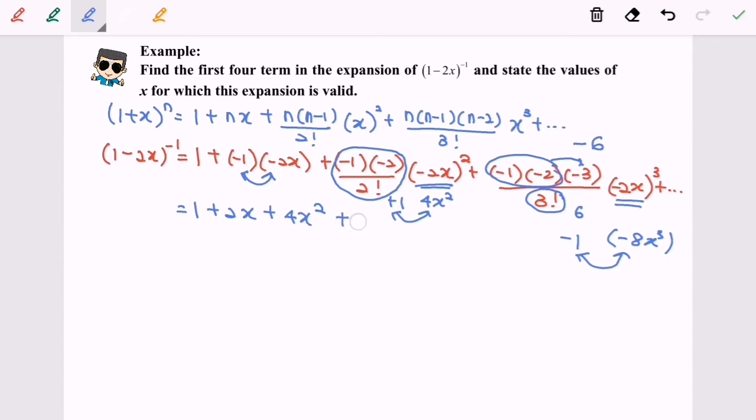So final answer will be 8x cubed. So finally, our answer will become (1 - 2x)^(-1) equals 1 + 2x + 4x squared + 8x cubed. So here we have the expansion. Now we are going to find the validity.